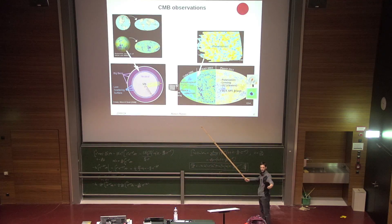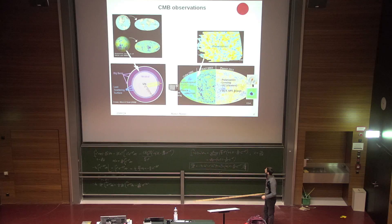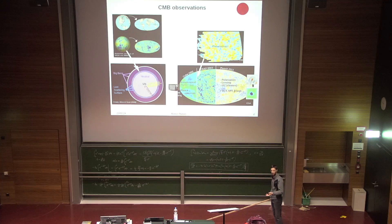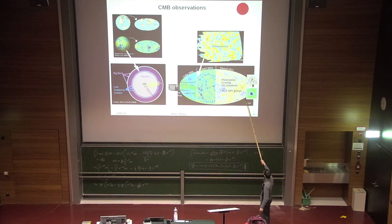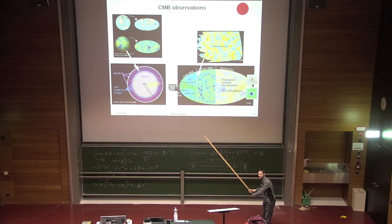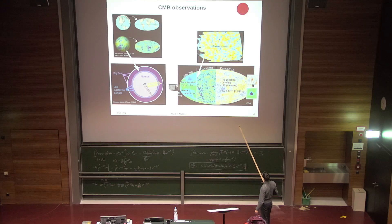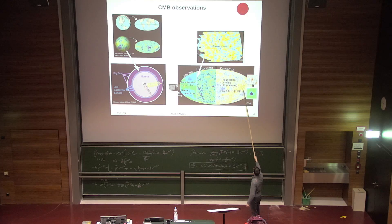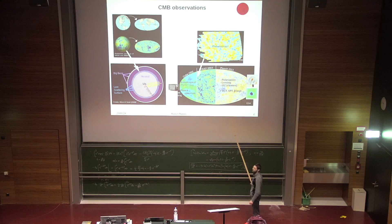I should also mention ground-based observations — dishes, antennas, telescopes — with diameters of 40 meters or around 10 meters, such as ACT and the South Pole Telescope. These cannot observe the entire sky since they're limited to the hemisphere in which they're located. However, they achieve higher resolution than Planck.